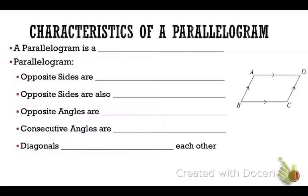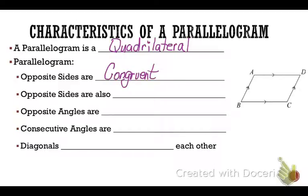For all parallelograms: a parallelogram is first a quadrilateral, so it's always a four-sided figure. A parallelogram has opposite sides that are congruent — that means opposite sides are the same length. Opposite sides of a parallelogram are also parallel, and that's where it gets its name from.